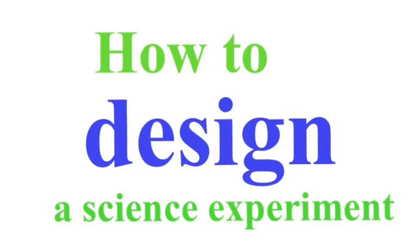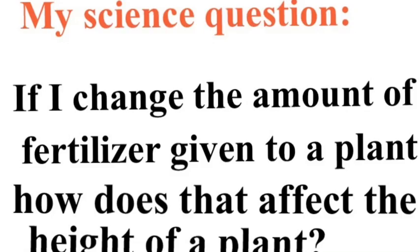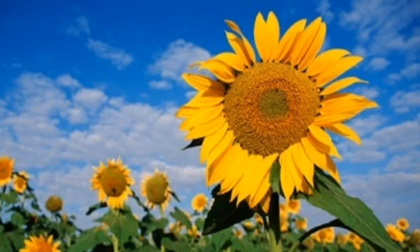Hello nature lovers and welcome to another exciting episode of Environmental Systems and Societies video series. This one is how to design a science experiment. I want to start with my science question, which we've worked a lot on making, and mine for this example is: if I change the amount of fertilizer given to a plant, how does that affect the height of a plant?